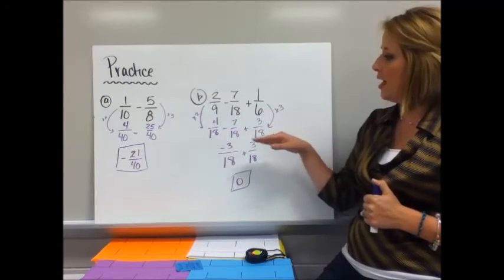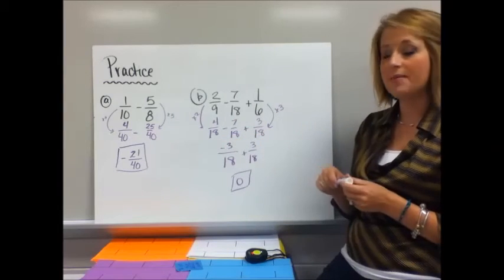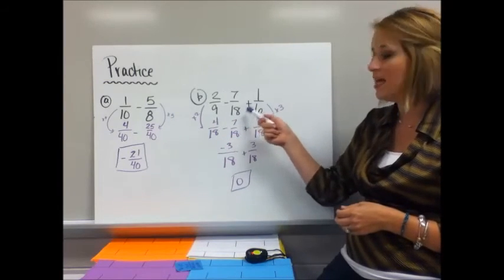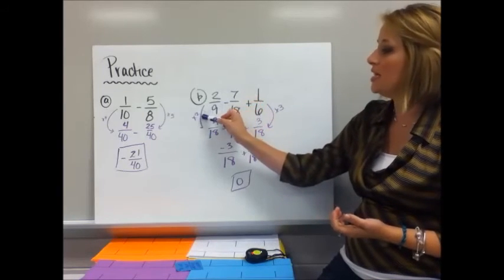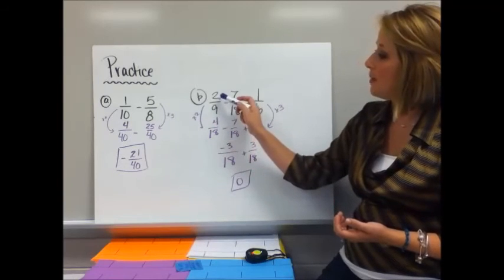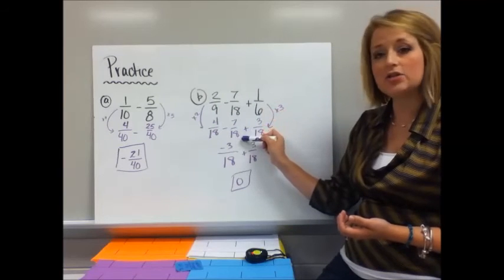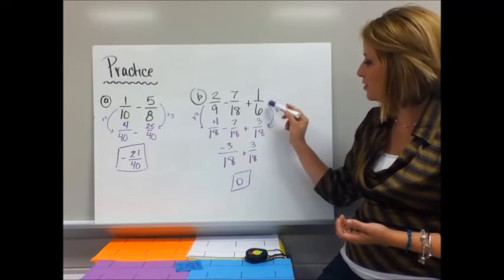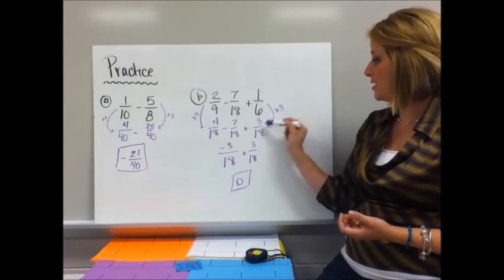For practice B, I have three numbers. I still need to find a common denominator for all three of them, and one of the given denominators actually is the least common denominator. For 2/9, I need to multiply by 2 because 9 times 2 is 18, so I multiply my top numbers—2 times 2 is 4. 7/18 just comes down. 1/6, I'm going to multiply by 3 because 6 times 3 is 18. 1 times 3 is 3.